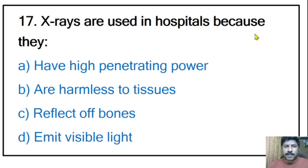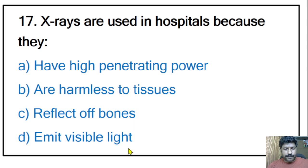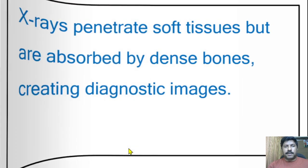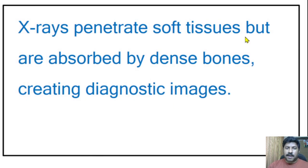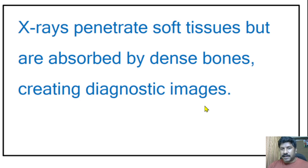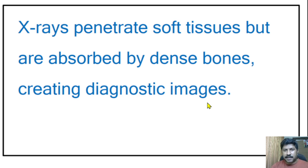Seventeenth question: X-rays are used in hospitals because they have high penetrating power, are harmless to tissues, reflect off bones, or emit visible light? The correct answer is high penetrating power. X-rays penetrate soft tissues but are absorbed by dense bones, creating diagnostic images. In X-rays, bones appear white and soft tissue appears dark.